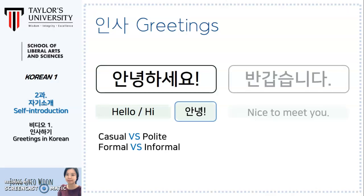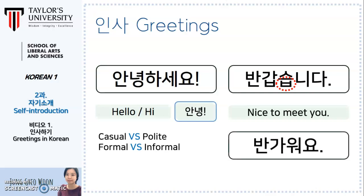The next expression is 'nice to meet you.' The ending consonant B sound sounds like M because it is assimilated by the following sound. The form has been changed from 반갑습니다 to 반가워요. In dialogue, both mean the same.